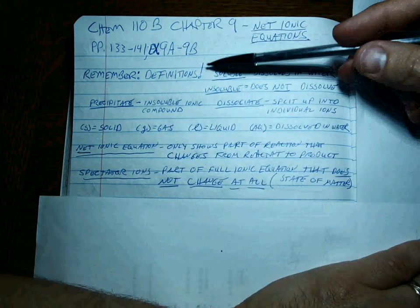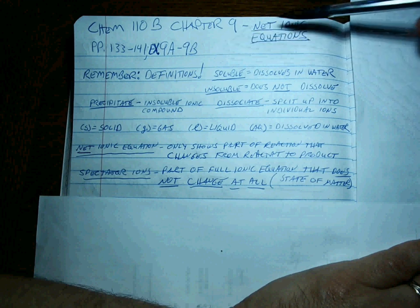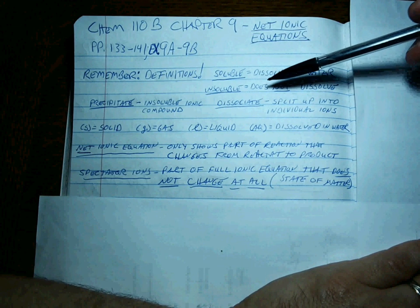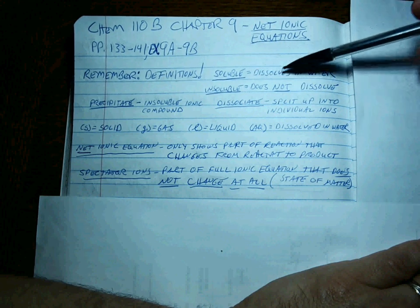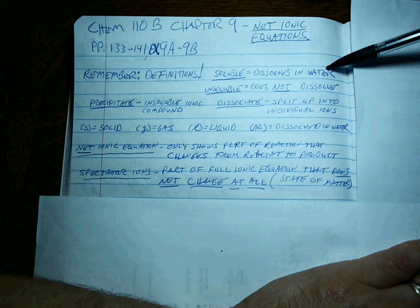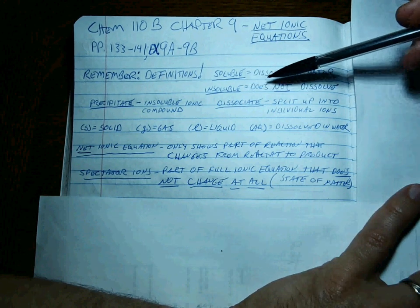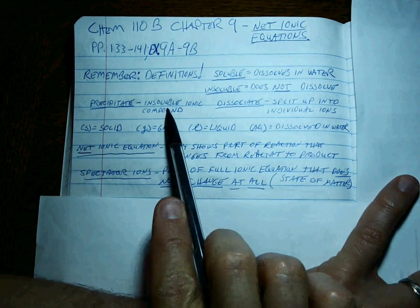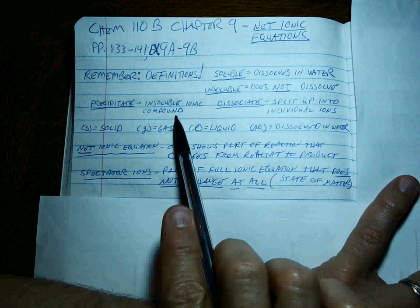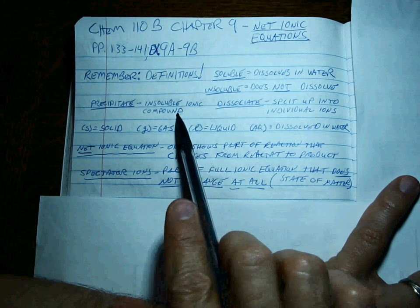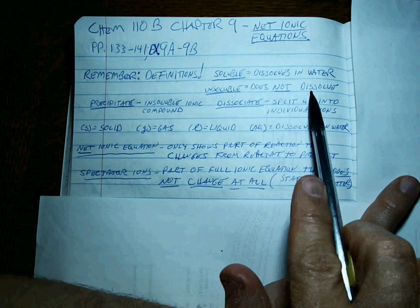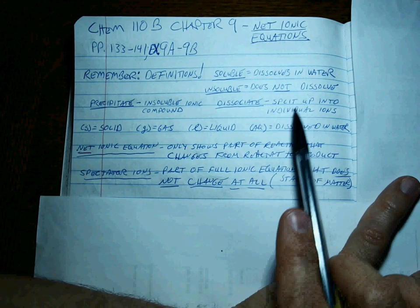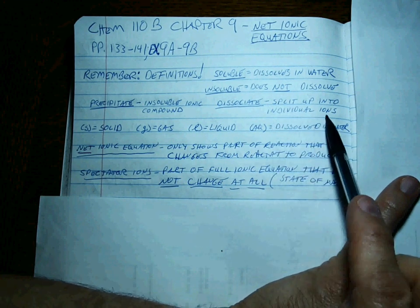You have to remember your definitions to be good at this, because a lot of these words will give you hints in the problems and it will help. Soluble means dissolved in water. Insoluble means it will not dissolve in water. A precipitate is an insoluble ionic compound — an ionic compound that does not dissolve in water. And to dissociate means to split up into individual ions.